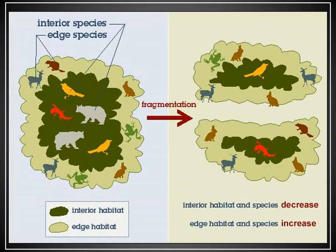This image displays the theoretical effect of fragmentation and edge on wildlife species. What occurs is a gradual reduction in the abundance of forest interior species, like black bear, and a gradual increase in the abundance of edge species, like white-tailed deer.